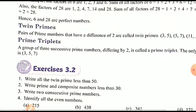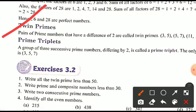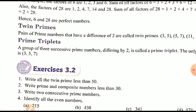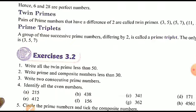The next topic is twin prime numbers. A pair of prime numbers that have a difference of 2 are called twin primes. For example: (3, 5), (5, 7), and (11, 13) — each pair has a difference of 2, so they are twin prime numbers.